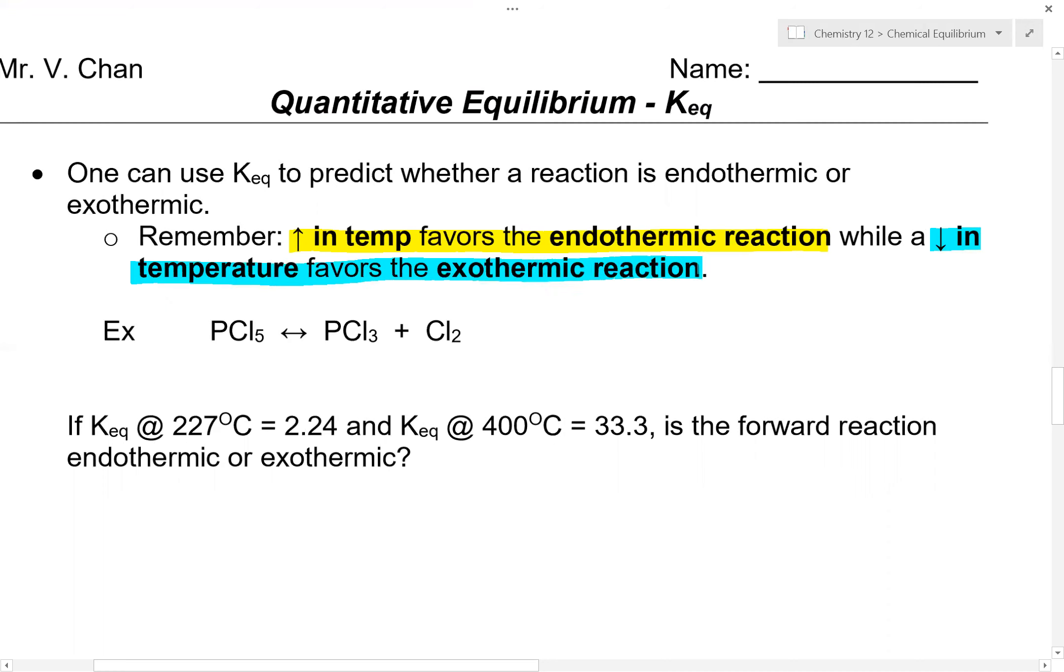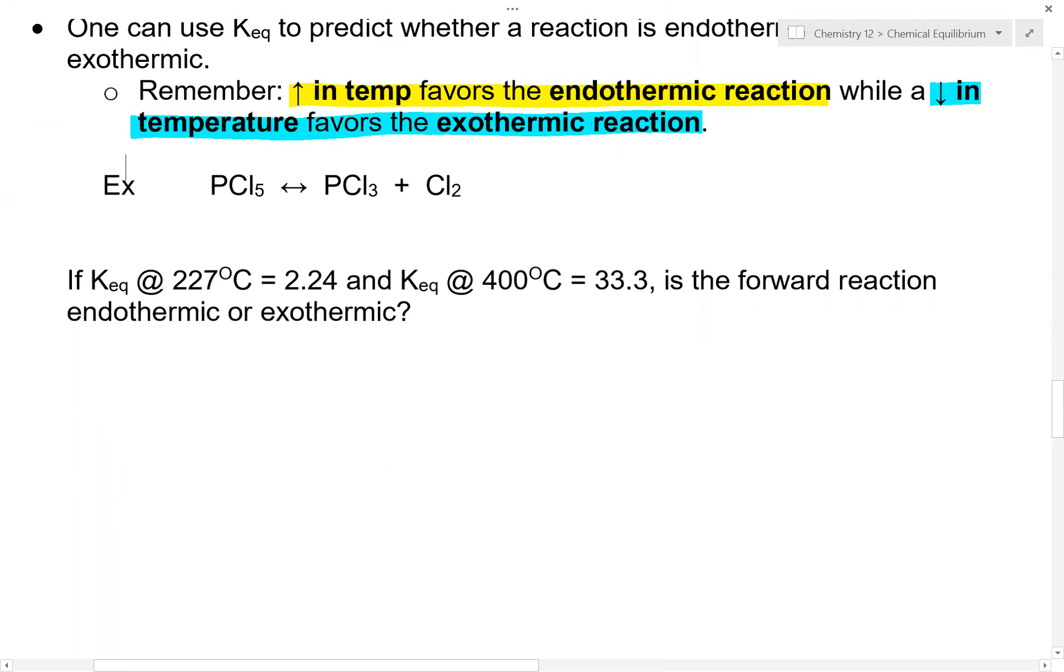Now, let's say if we have a given reaction here: PCl5 gives you PCl3 and Cl2. If Keq at 227 degrees is 2.24 and Keq at 400 degrees Celsius is 33.3, is the forward reaction endo or exothermic? In this case, you want to take a look at this.